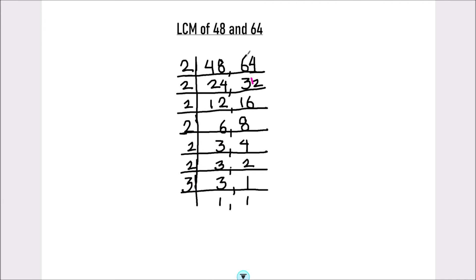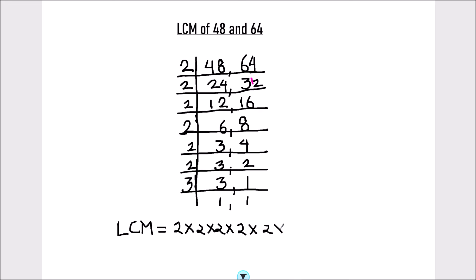To find the LCM of the two numbers, we are going to take the product of all the factors which are on the right hand side of the ladder. So LCM will be equal to 2 times 2 times 2 times 2 times 2 times 2 times 2 times 3.